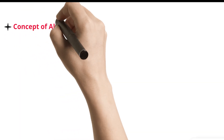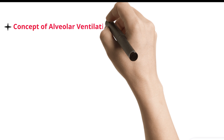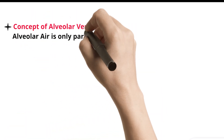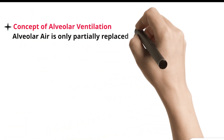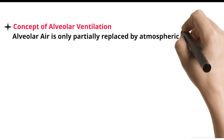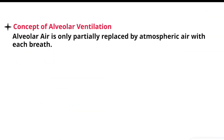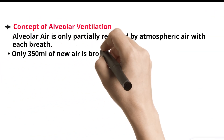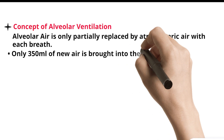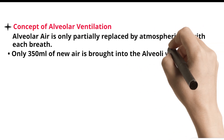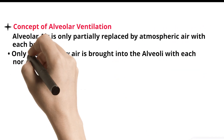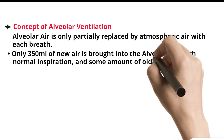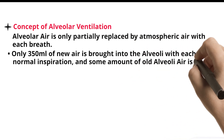Concept of Alveolar Ventilation. Alveolar air is only partially replaced by atmospheric air with each breath. Only 350 milliliters of new air is brought into the alveoli with each normal inspiration, and some amount of old alveolar air is expired.